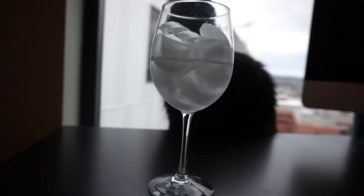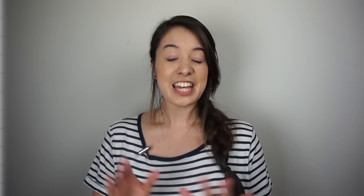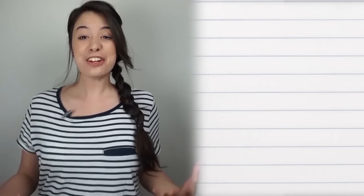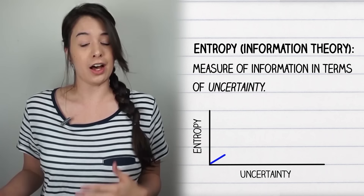You may have heard the word entropy before, usually used to describe a messy room, ice cubes melting, or a demon in a box. In physics, entropy means the measure of chaos or disorder in a system — the lower the order, the higher the entropy. In information theory, entropy is the measure of information in terms of uncertainty. The higher the uncertainty, the higher the entropy, and the more information is in the system.